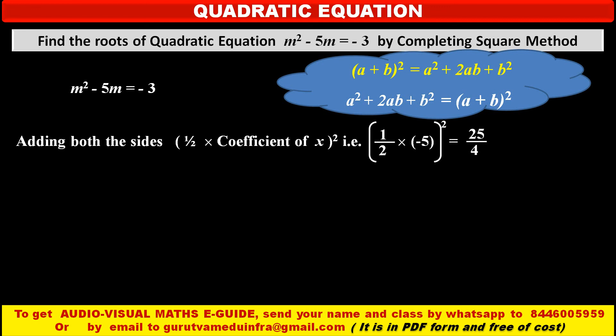Now we have to add this value both the sides of our equation. So we get in the left hand side, m square minus 5m plus 25 upon 4 is equal to in the right hand side, minus 3 plus 25 upon 4.